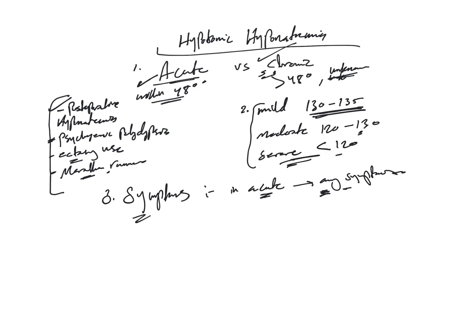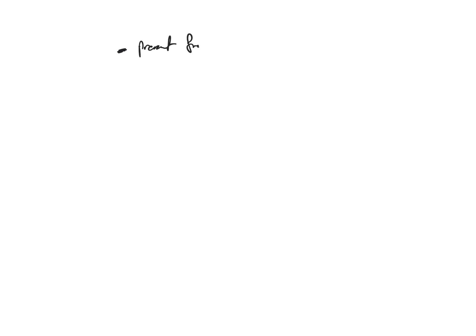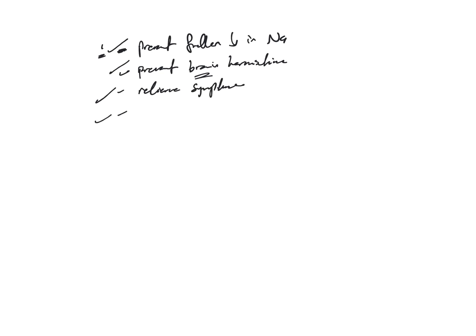Severe symptoms — mainly seizures and decreased level of consciousness — require emergent treatment regardless of acute or chronic status. The four treatment goals are: first, prevent further decrease in sodium concentration; second, prevent brain herniation (mainly a risk in acute hyponatremia); third, relieve symptoms; and fourth, prevent rapid correction and osmotic demyelination syndrome.